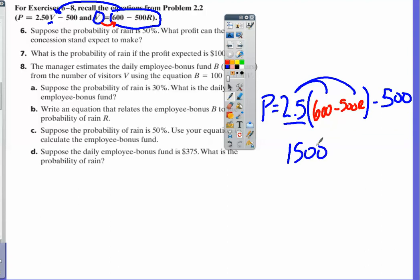2.5 times negative 500R is negative 1,250R. We still have the minus 500.